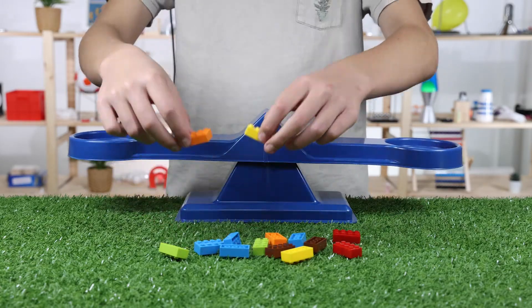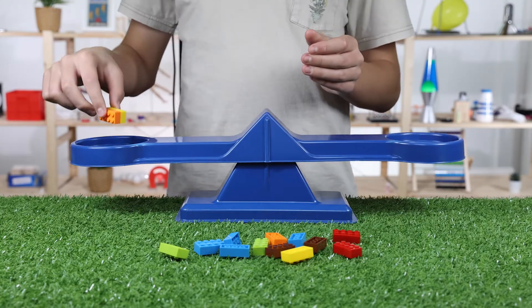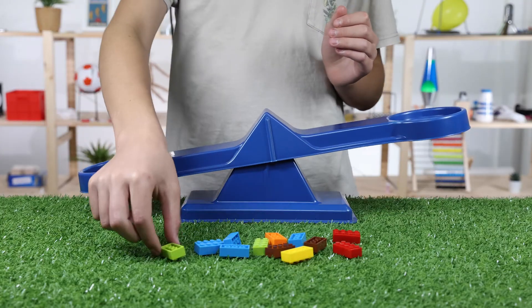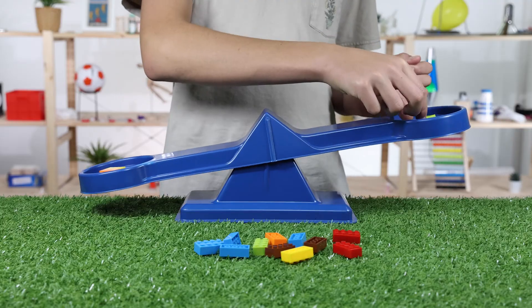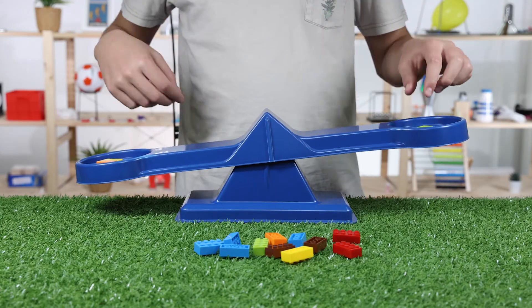What if we put two blocks on one side of the balance and one block on the other side? Two blocks has a greater mass than one block.